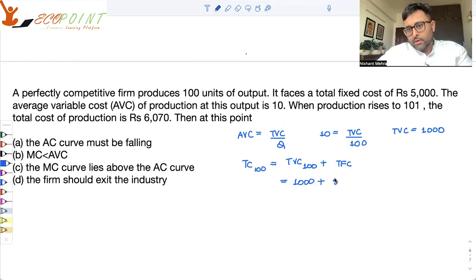What is the total fixed cost? 5,000. So the total cost of 100 units comes out to be 6,000.